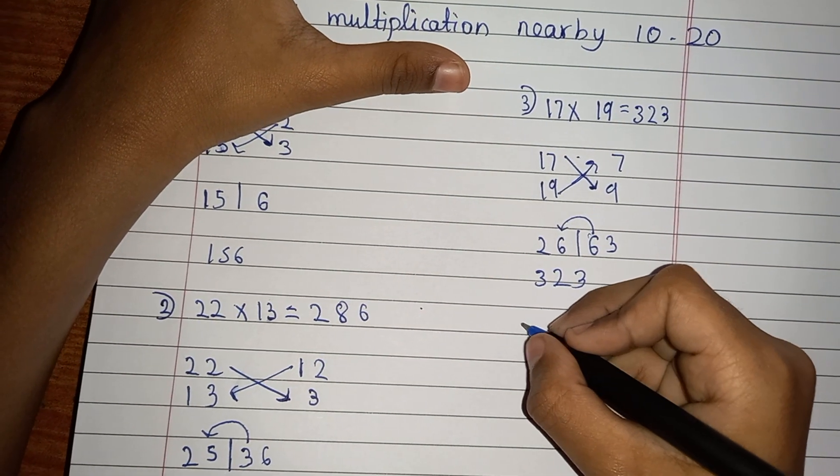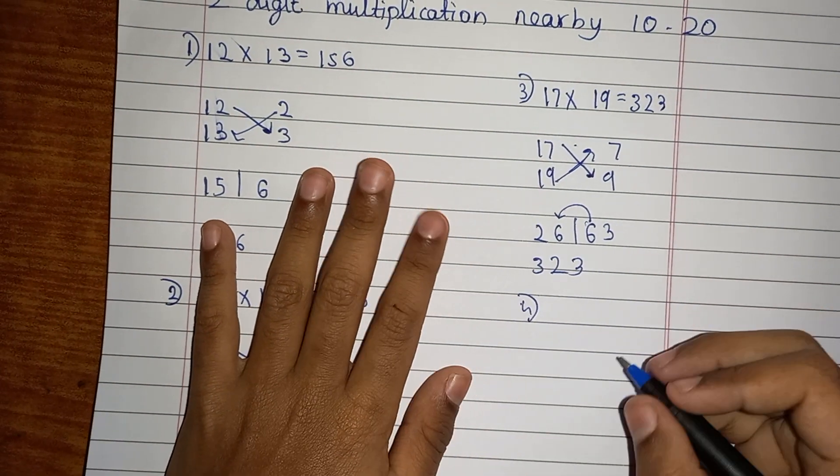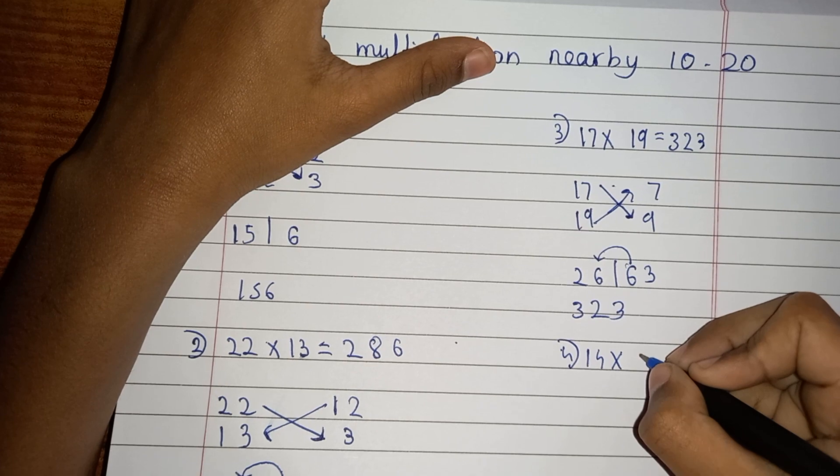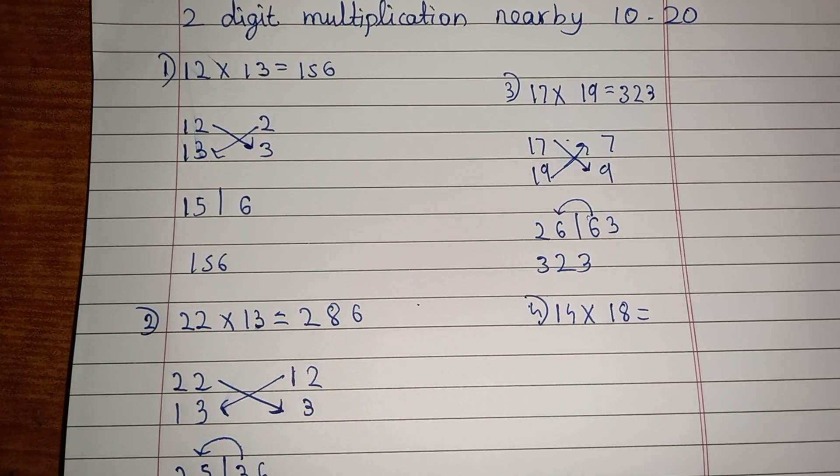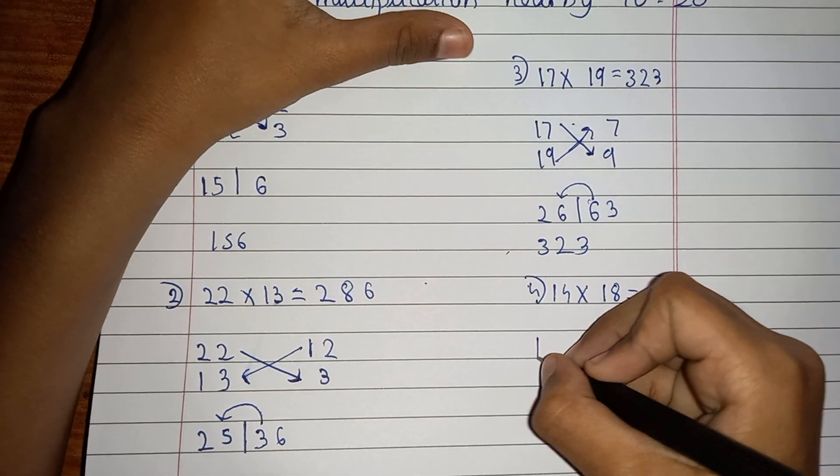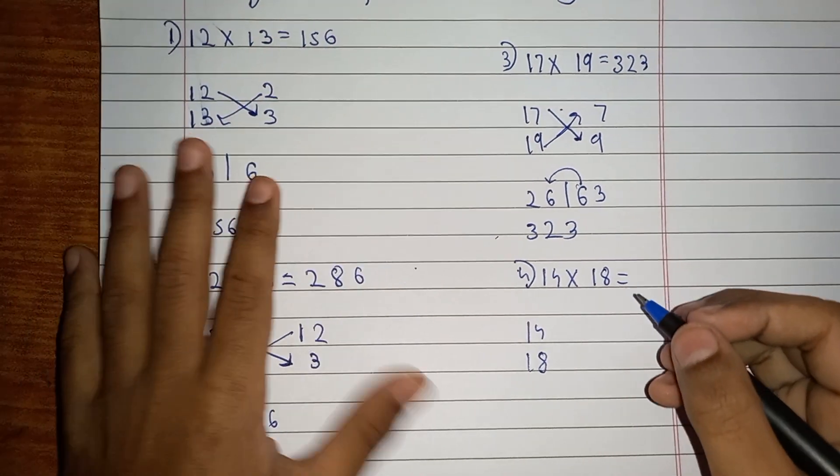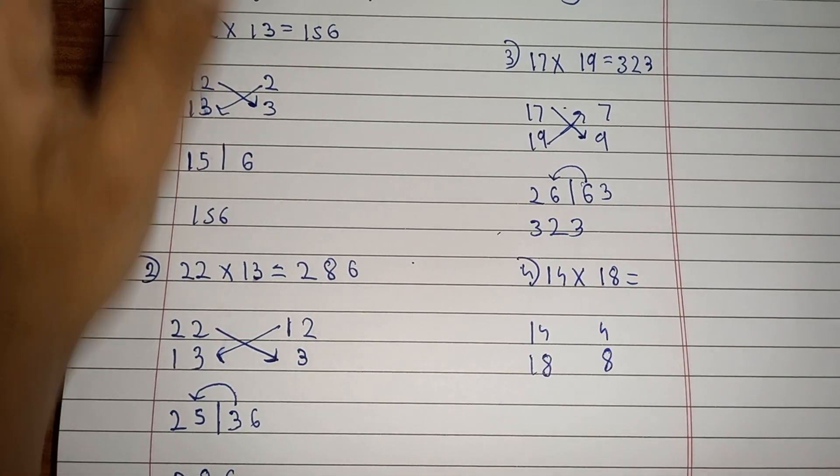Now going with the fourth one, let me think. Maybe 14 multiplied by 18. Let's see how much it comes. 14 here, 18 here, then 4 will come here, then 8 will come here. Then add them guys.